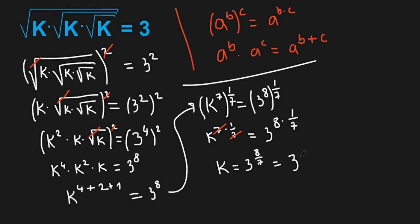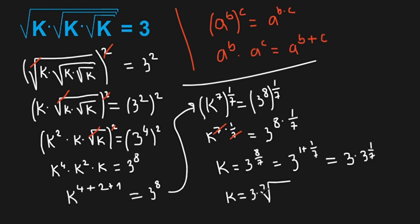This can be written as 3 to the power of 1 plus 1 over 7, so this equals 3 times 3 to the power of 1 over 7. This means k equals 3 times the 7th root of 3. And this is our answer.